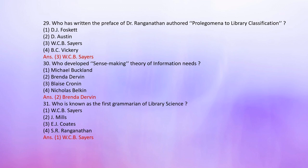Number 31: Who is known as the first grammarian of library science? 1. W.C.B. Sayers, 2. J. Mills, 3. E.J. Coates, 4. Dr. S.R. Ranganathan. The correct answer is W.C.B. Sayers.